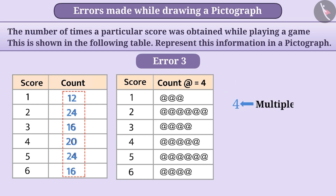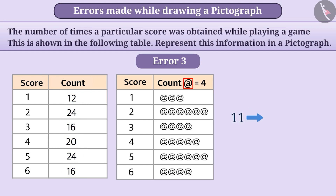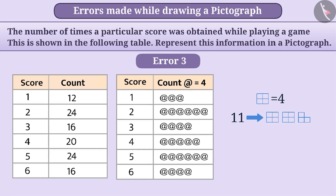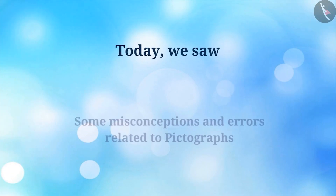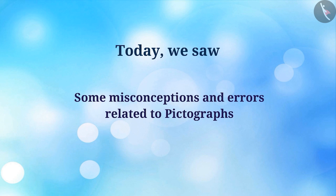Error 3: Here, all numbers are multiples of 4. If we use a complex symbol, we would have difficulty representing numbers like 11 correctly. Therefore, we should always use simple symbols. For example, using a simple symbol, we can easily represent 11. Today we saw some misconceptions and errors related to pictographs.